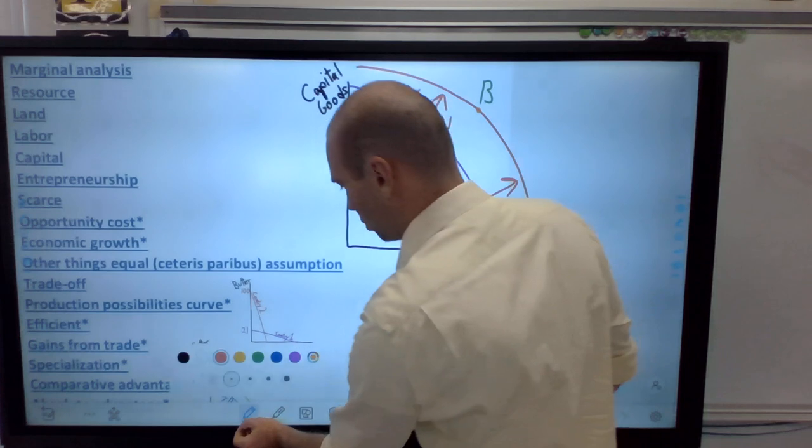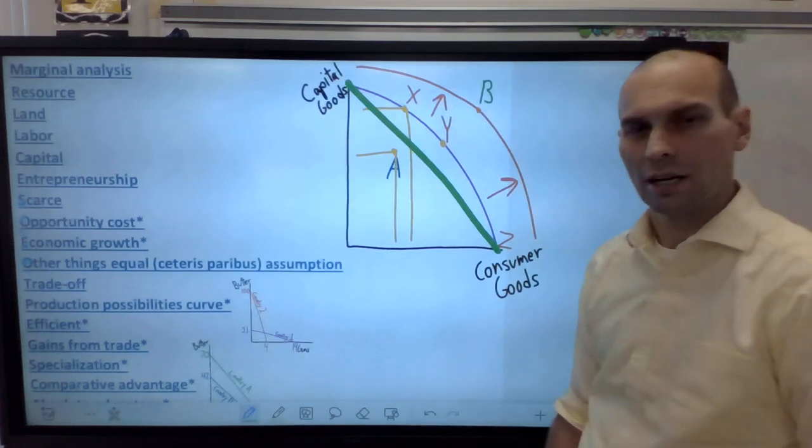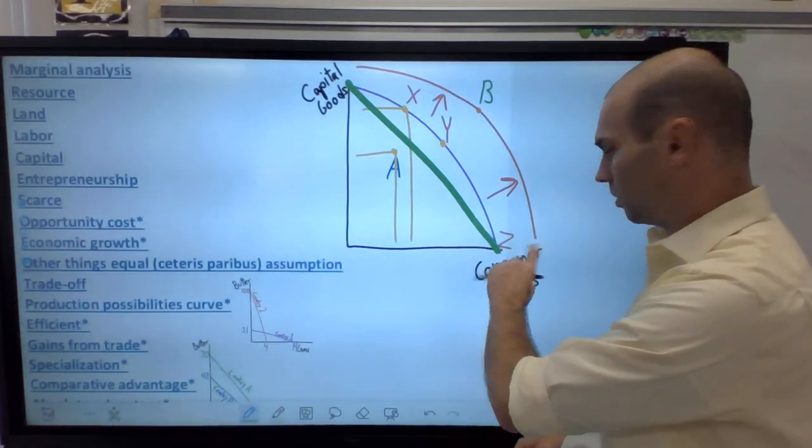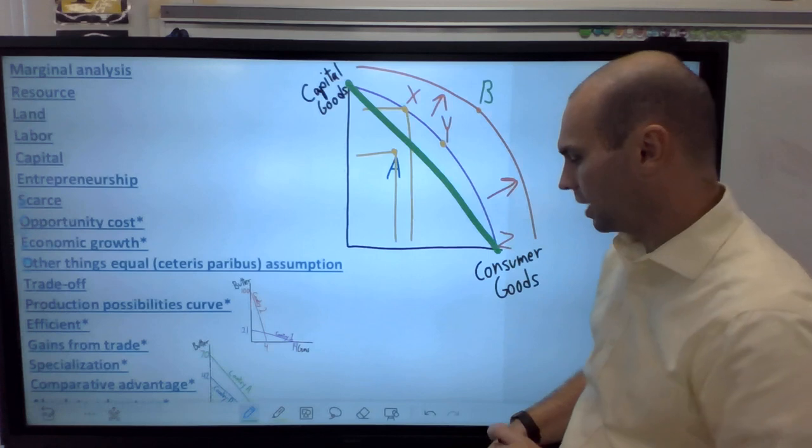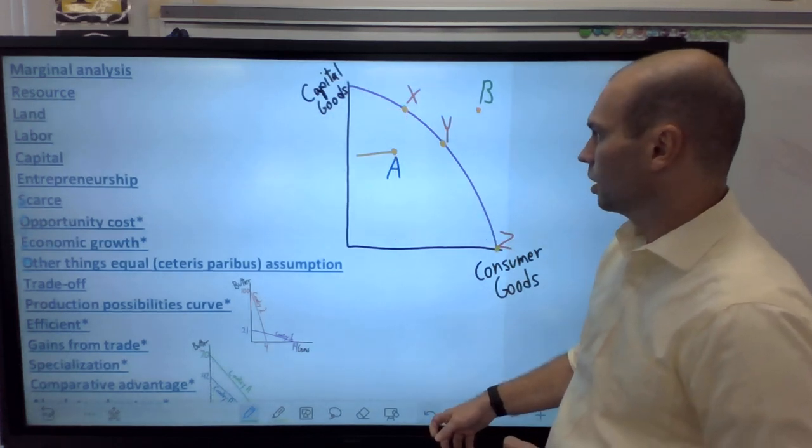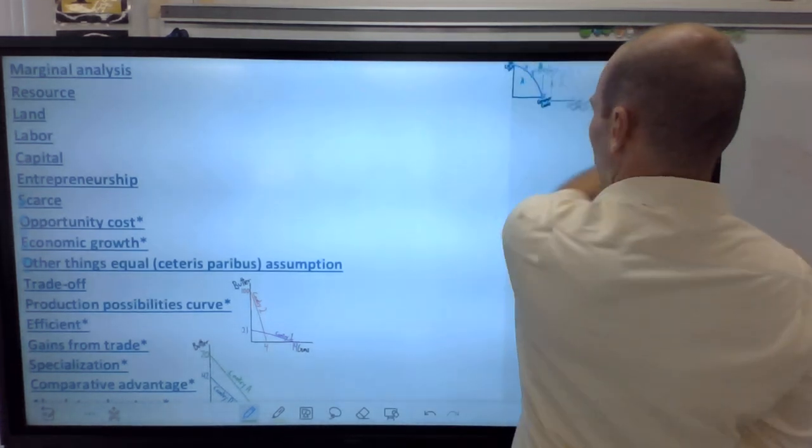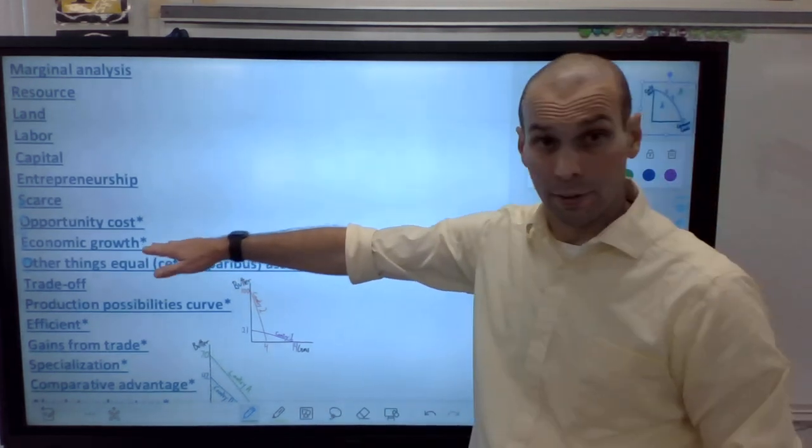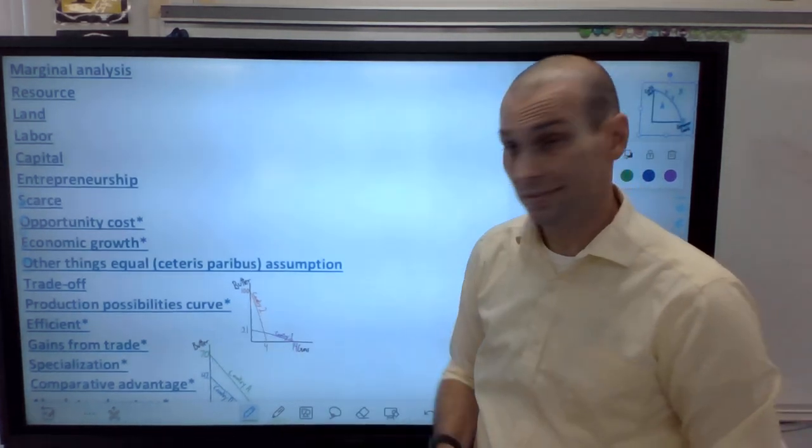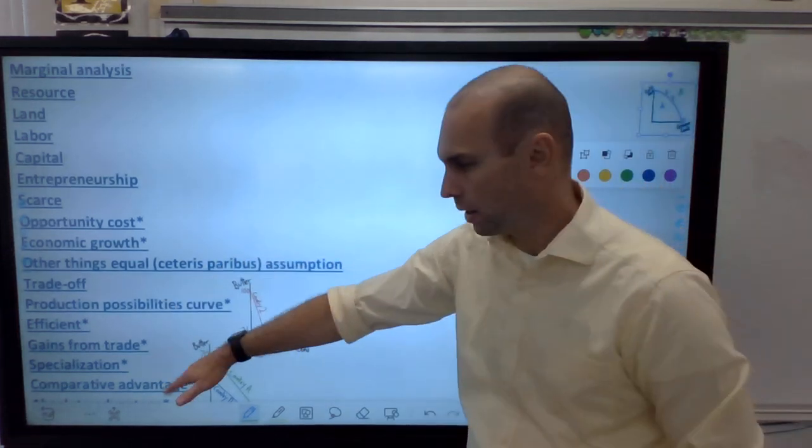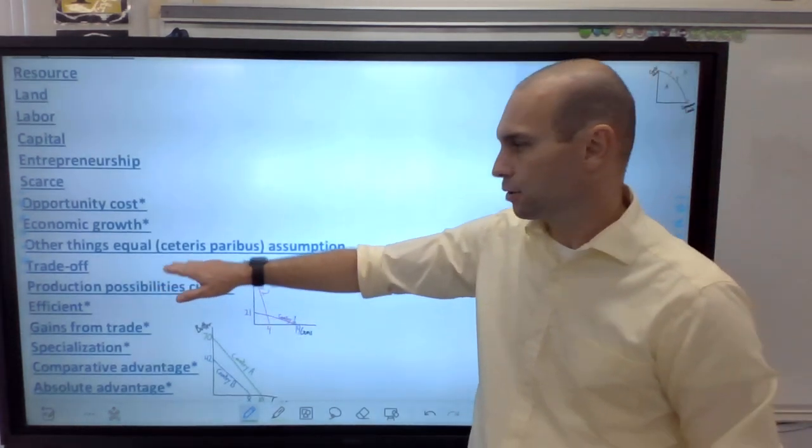And we would have something called economic growth. So B is impossible unless you add more land, labor, capital, human capital, or technology. And that would allow you to go out to point B. Remember, it's impossible if nothing changes. And lastly, just to make sure you all understand, a PPF can also be a straight line. We'll talk about that, which means you have constant opportunity cost, or it's a ratio, but bowed out means you have specialization. Things we'll get more into later.